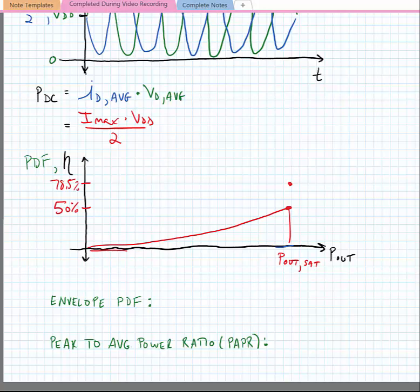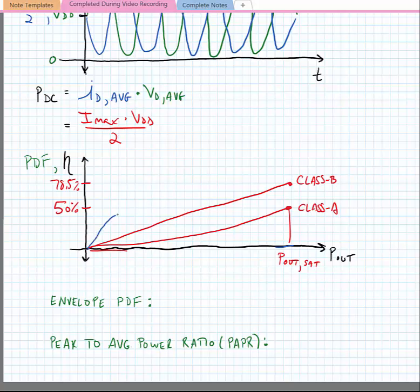The class B amplifier has a peak efficiency of 78.5% — pi over four — and it rolls off linearly with power. Now if we look at a modern communication waveform such as an OFDM waveform, it has what we would call a probability density function with respect to its output power. Most modern power amplifiers rarely operate anywhere near their peak output power; they operate instead at what we would call an average output power, dictated by finding the average of this PDF.